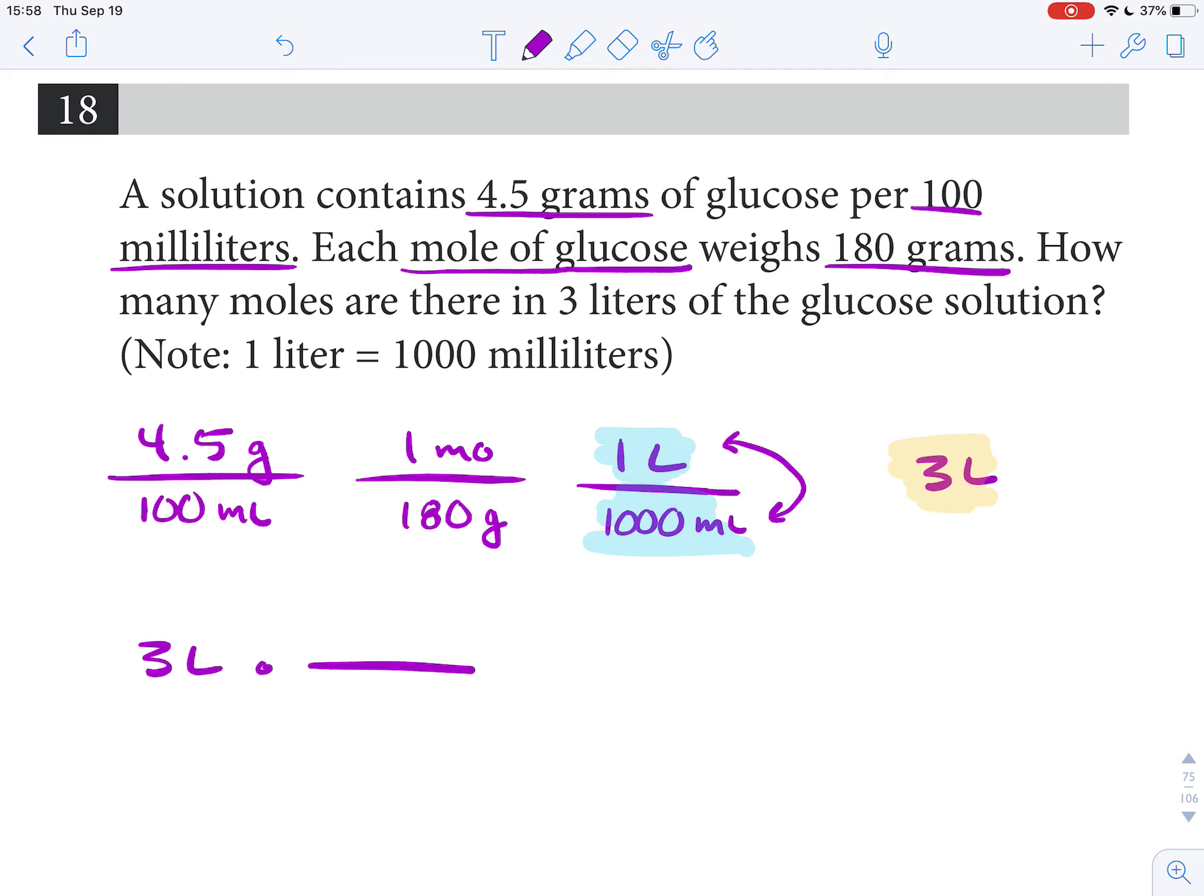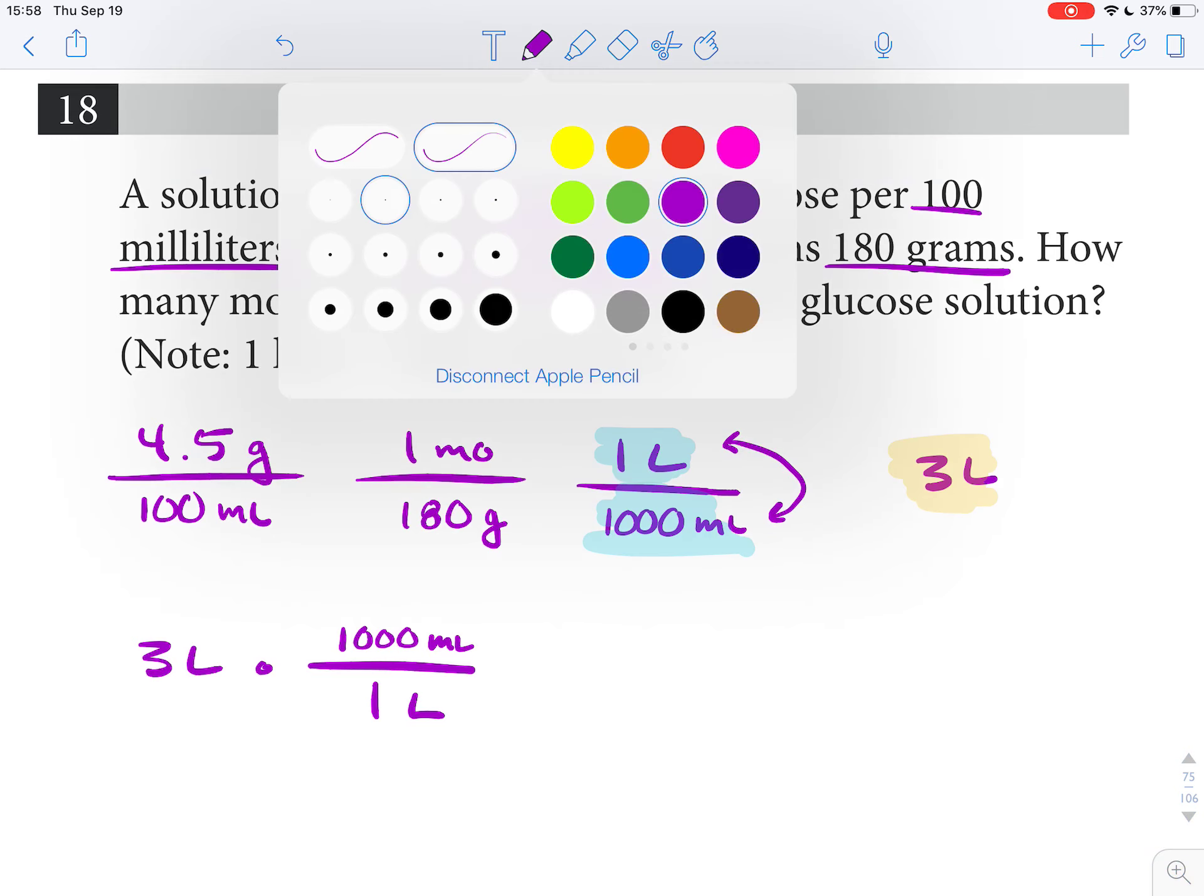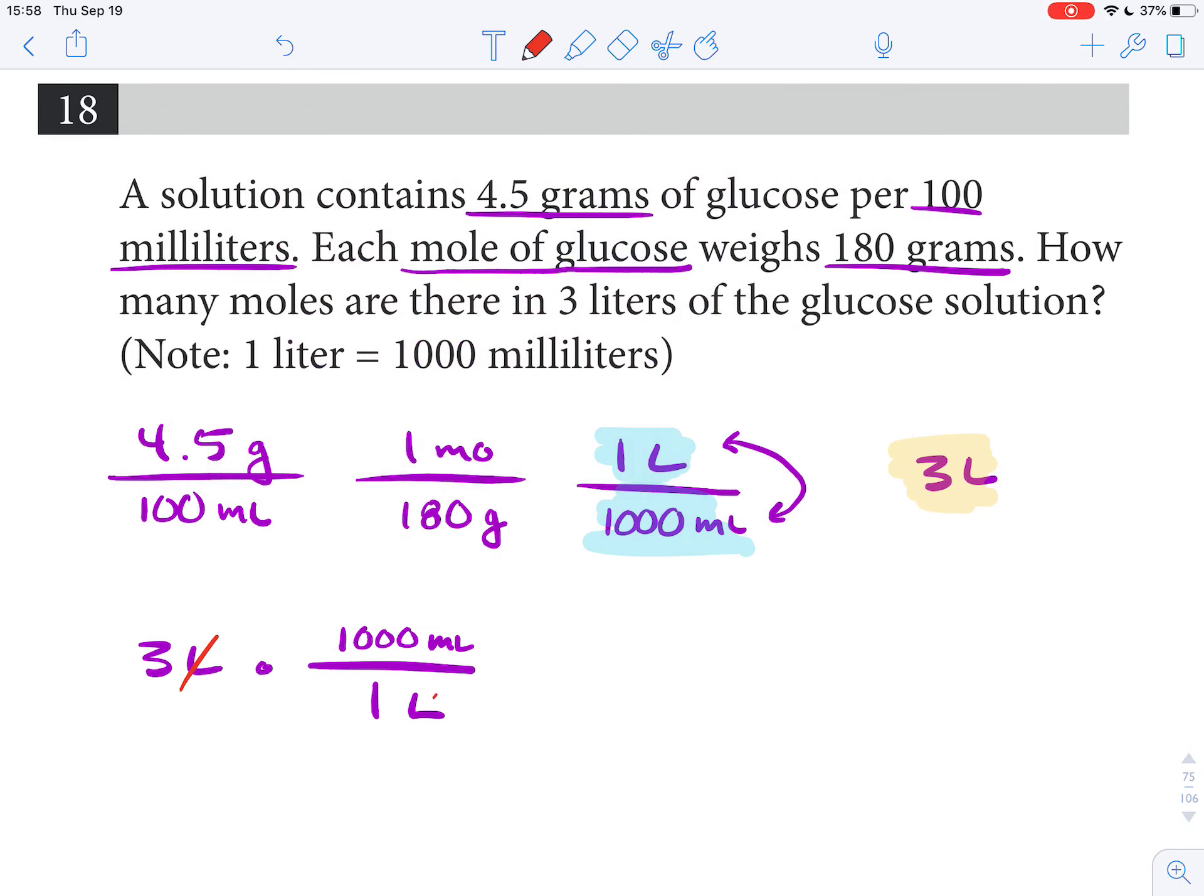I'm saying one liter is equal to 1000 milliliters. I could reverse that - I could say 1000 milliliters is equal to one liter and it's not going to change that. But we want to cancel, so using dimensional analysis I'm going to rewrite this as 1000 milliliters is equal to one liter. What that does is that cancels out liters and leaves us with milliliters.